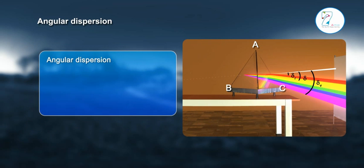Angular dispersion: δᵥ - δᵣ = A(μᵥ - 1) - A(μᵣ - 1) = Aμᵥ - A - Aμᵣ + A = A(μᵥ - μᵣ).